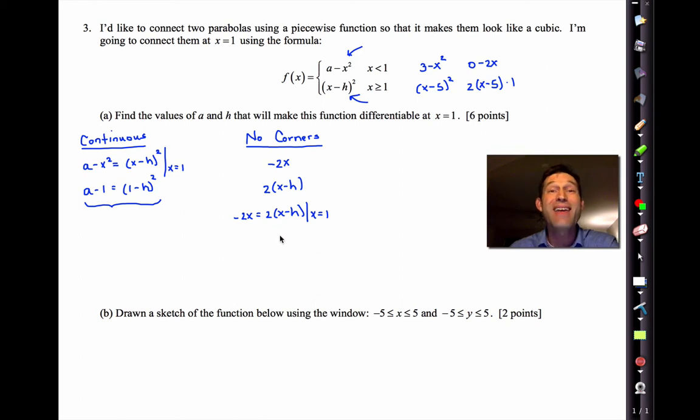One of the beautiful things about this particular problem is that the a has gone away in the corner situation. In other words, a is irrelevant. It makes no difference to whether there's a corner or not. So in fact, we can now solve this pretty easily. Putting 1 in for x, we'll get -2 = 2 - 2h. Subtracting 2 from both sides, -4 = -2h. And h is 2.